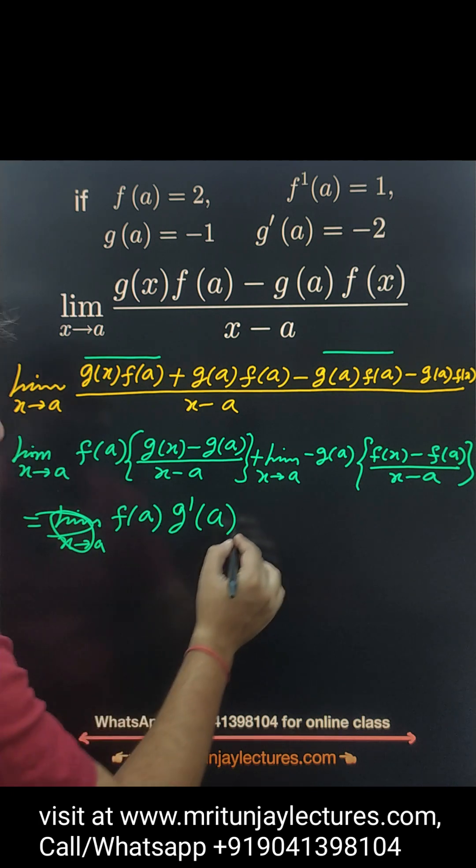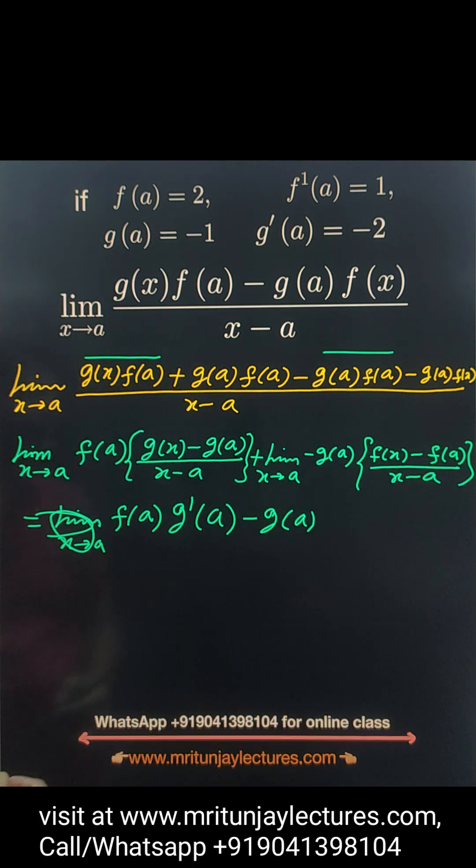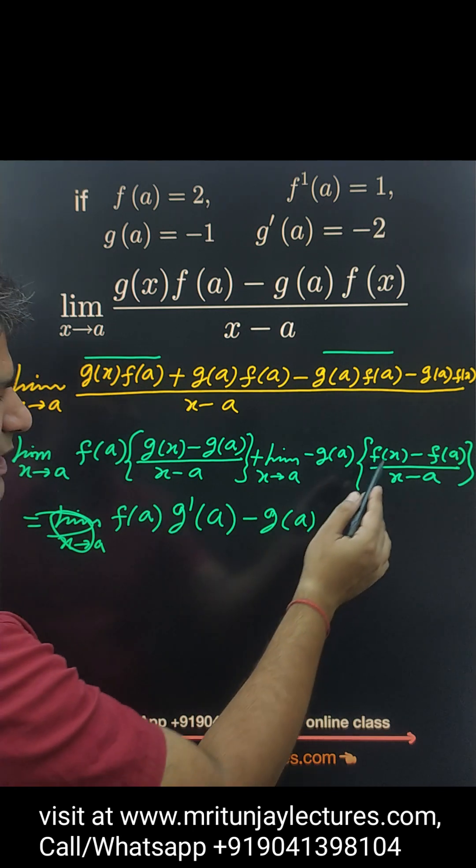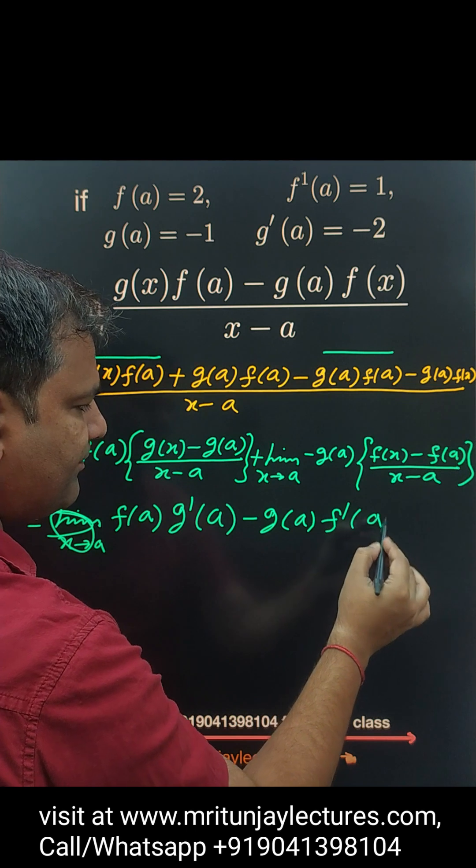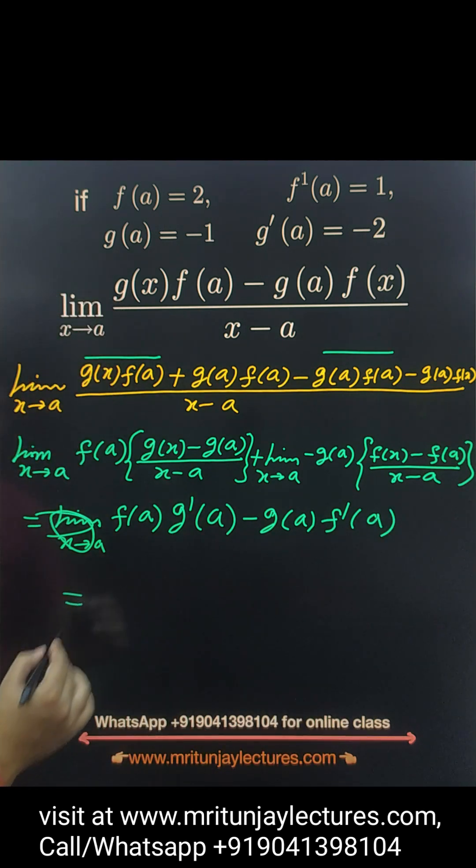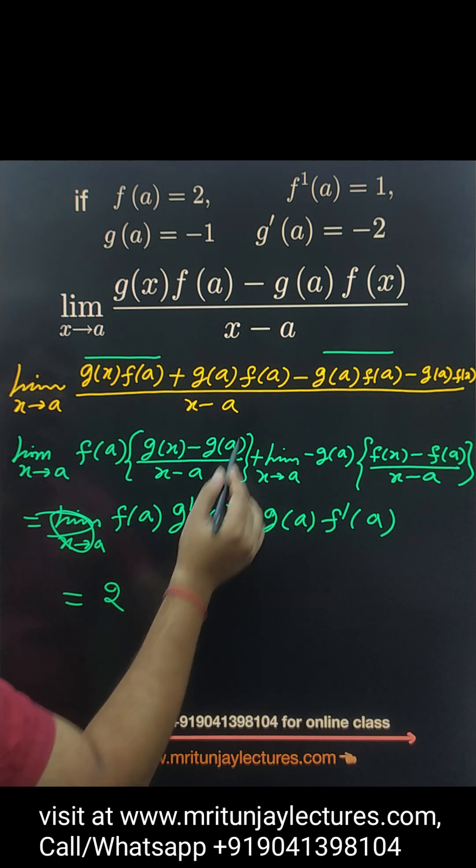Basically, and minus of g(a) into this one is f prime a. Now, put f(a) is 2, g prime a is minus 2.